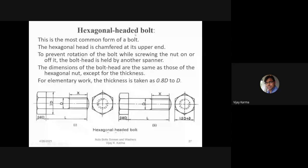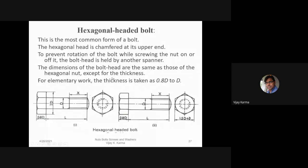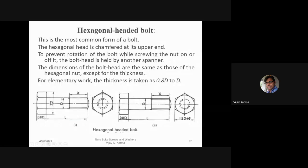This is a generalized form of a bolt — the hexagonal headed bolt — and this is the most common form. The upper end of the head is chamfered to prevent the rotation of the bolt while screwing the nut on or off it. The dimensions of the bolt head are the same as those of the hexagonal nut except for the thickness. The head thickness is 0.8 times d, where d is the bolt diameter.